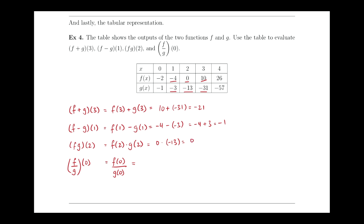And then lastly, f over g of 0. We're looking to find f of 0 over g of 0. f of 0 is negative 2. f of 2 over g of 0 is negative 1, which gleams up to 2.